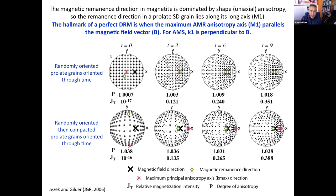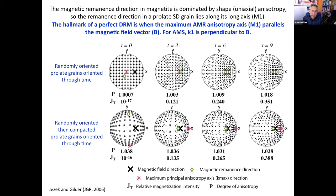Already at the first time step, the relative paleo intensity is much too high — it's already 10%, which is extremely high for a sediment. We're looking at sediments that are usually 0.01 for relative paleo intensity.